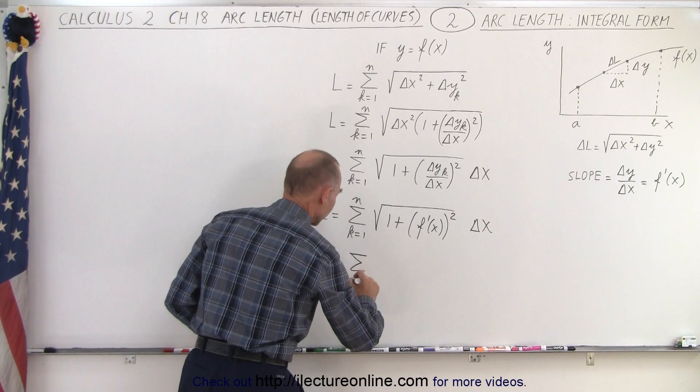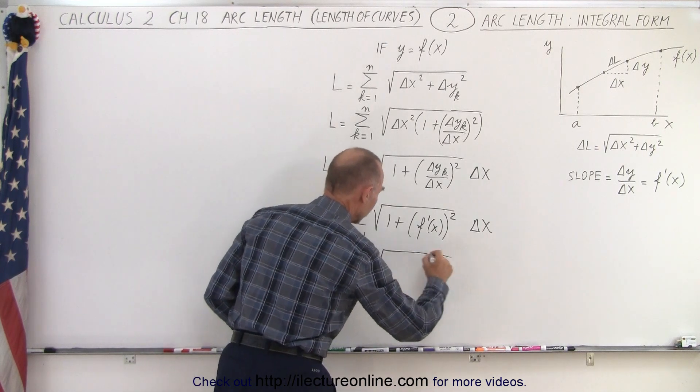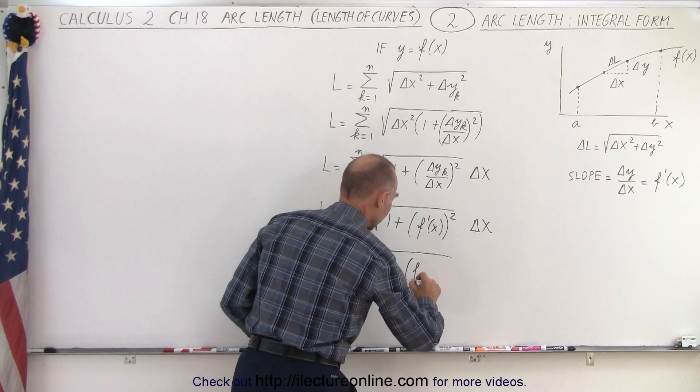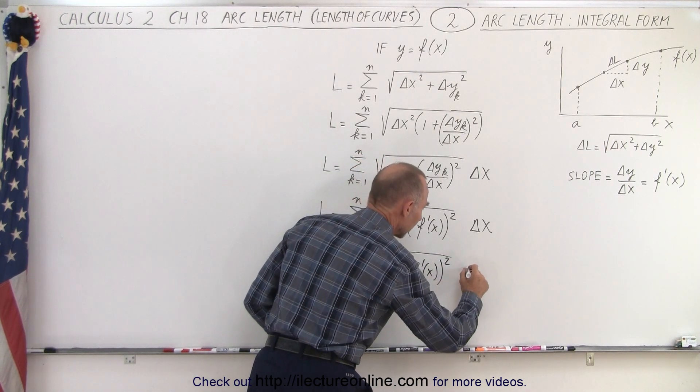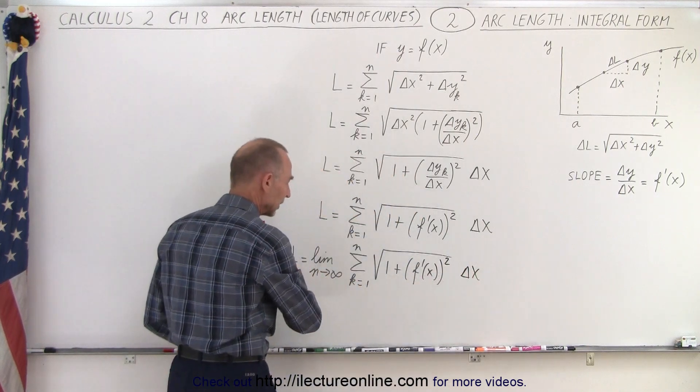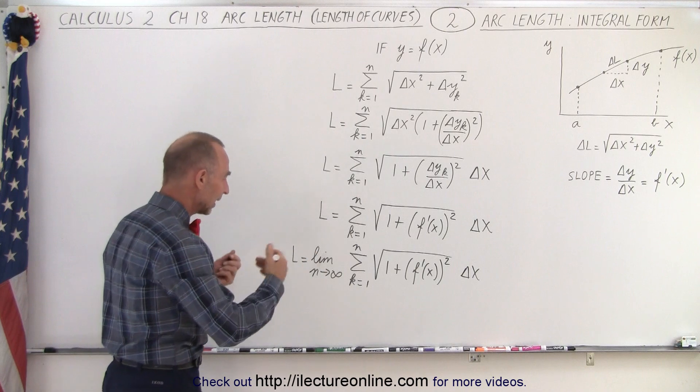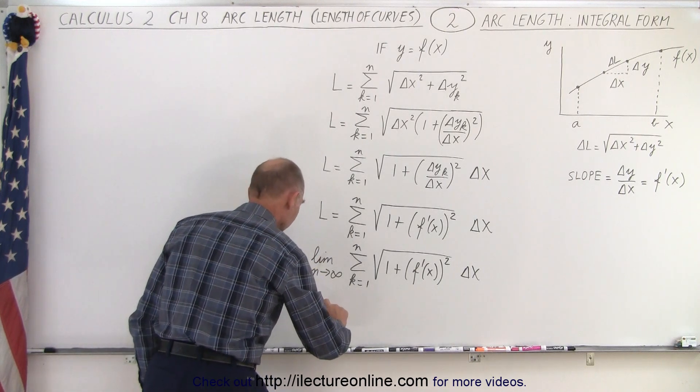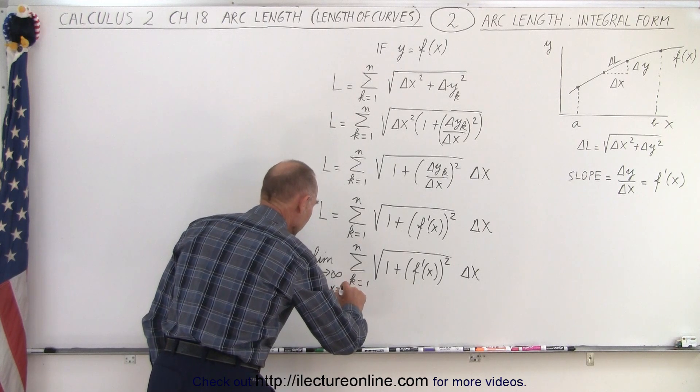So we have the sum from k equals 1 to n of the square root of 1 plus the derivative of the function squared times delta x. Now, of course, when we take this to the limit, as delta x goes to 0, as n goes to infinity, that then becomes the integral from x equals a to x equals b.